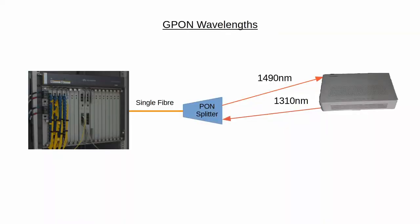In fiber optics, wavelengths are the frequency of the light. Fiber optic cables use wavelengths that humans cannot see. GPON uses 1,490 nanometers for the download and 1,310 nanometers for the upload wavelength.